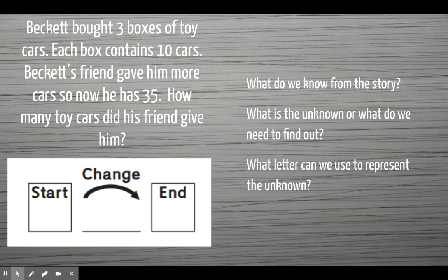Beckett bought three boxes of toy cars. Each box contains 10 cars. Beckett's friend gave him more cars, and now he has 35. How many toy cars did his friend give him?